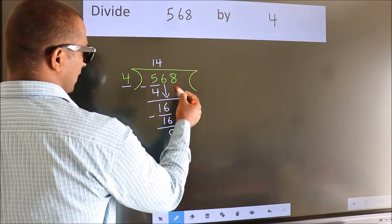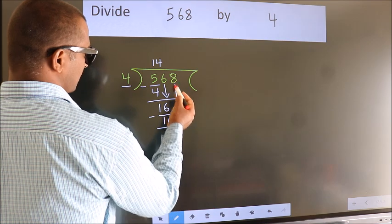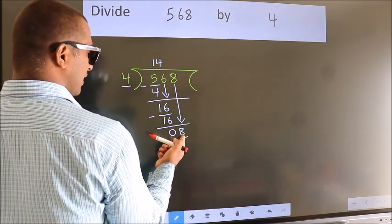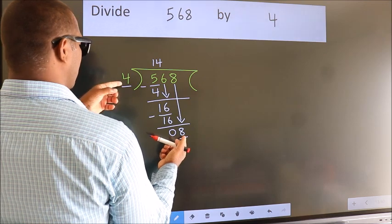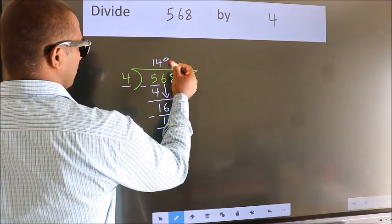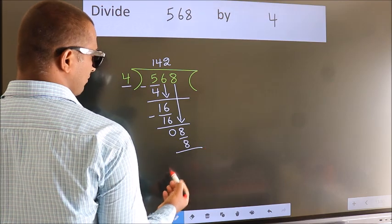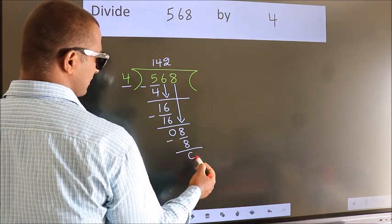After this, bring down the beside number. So, 8 down. So, 8. When do we get 8? In 4 table, 4 twos 8. Now we subtract. We get 0.